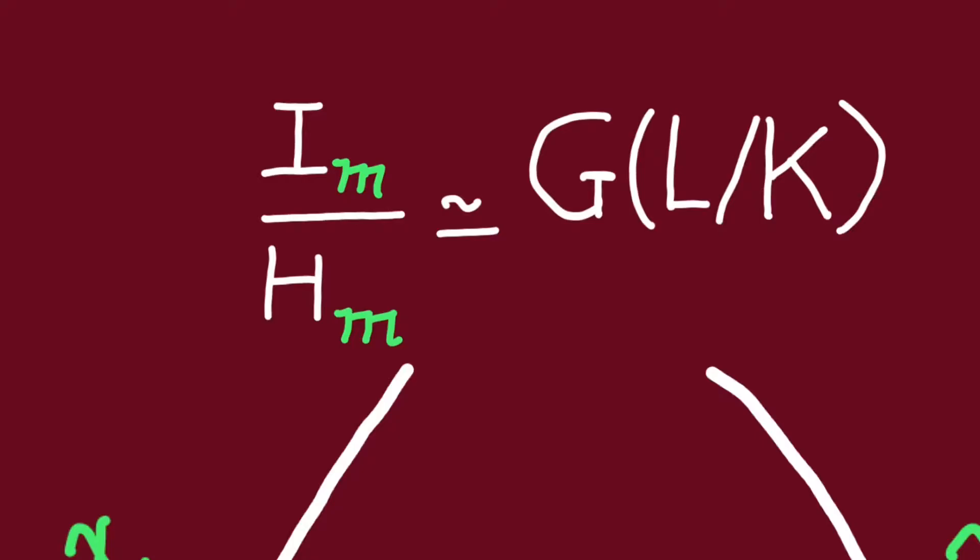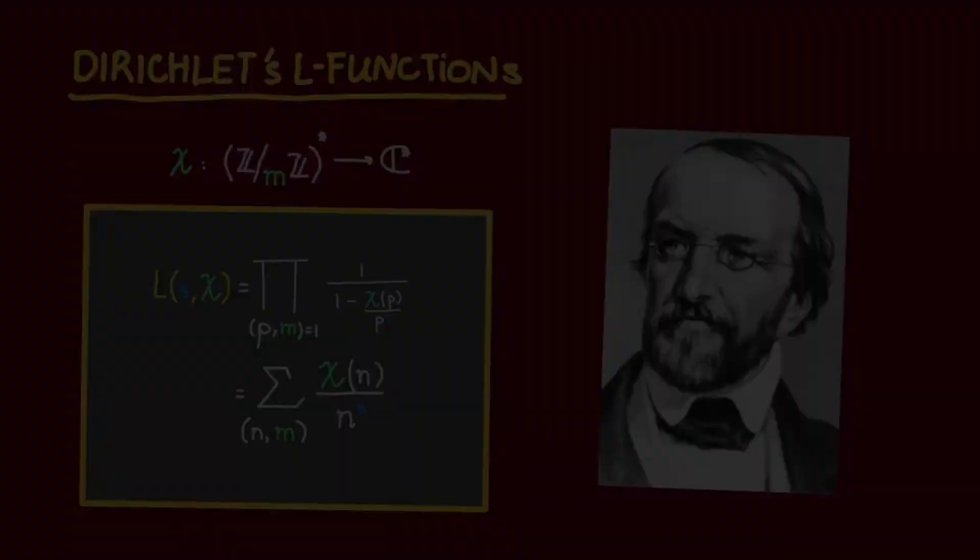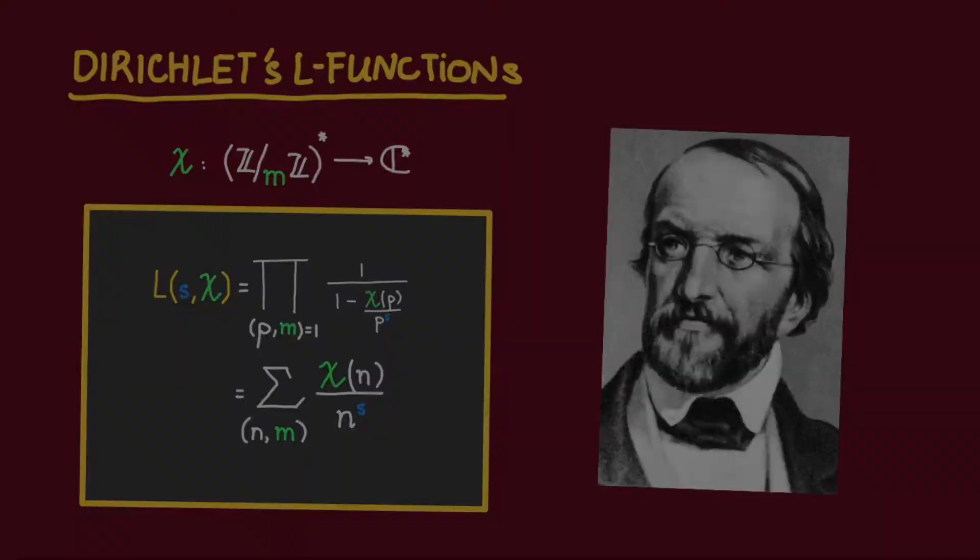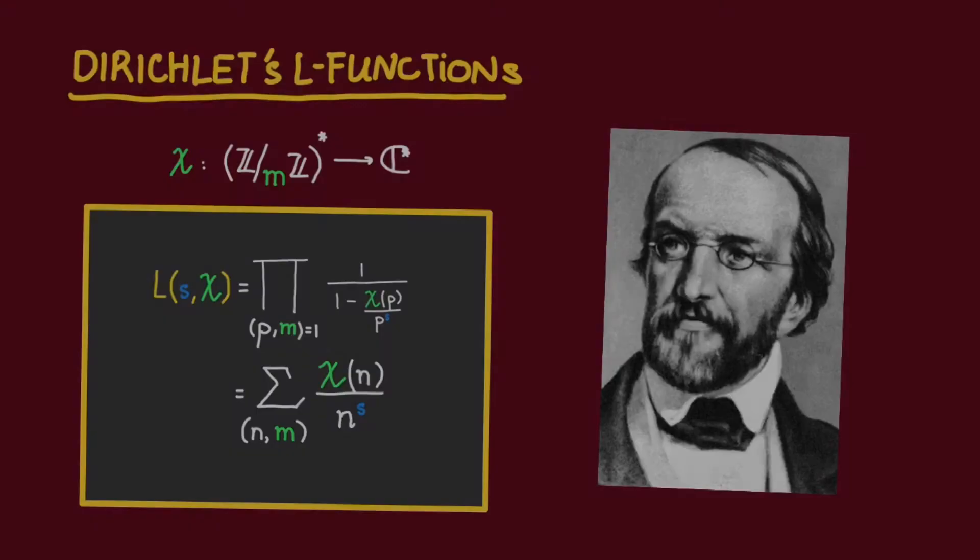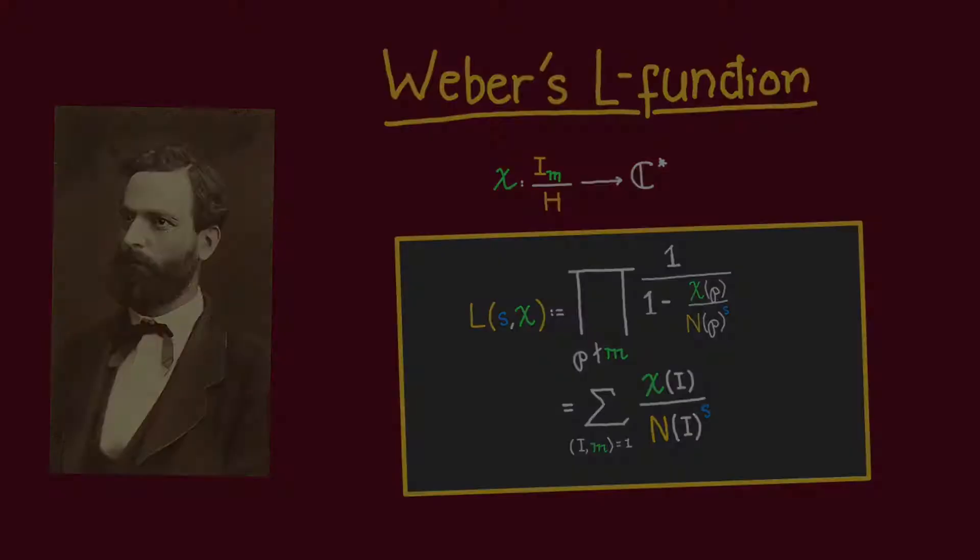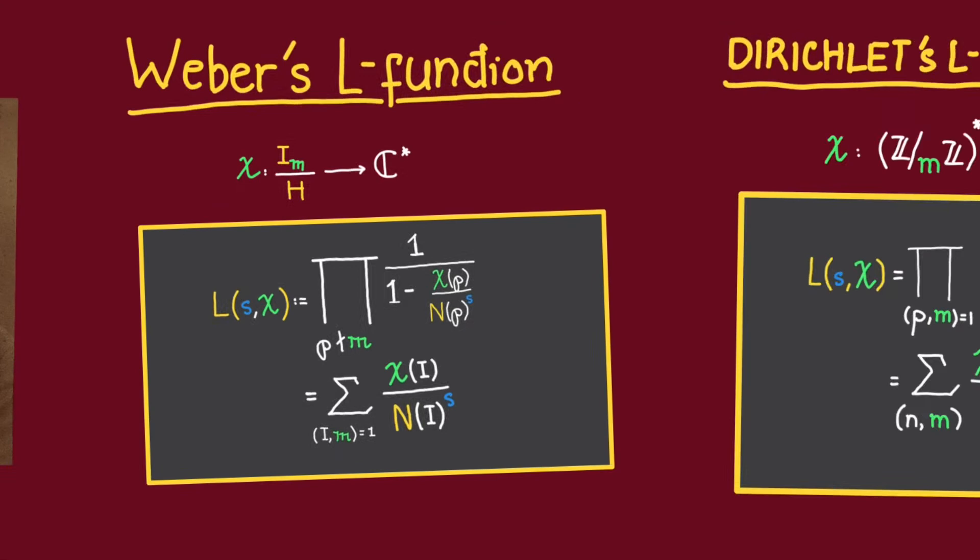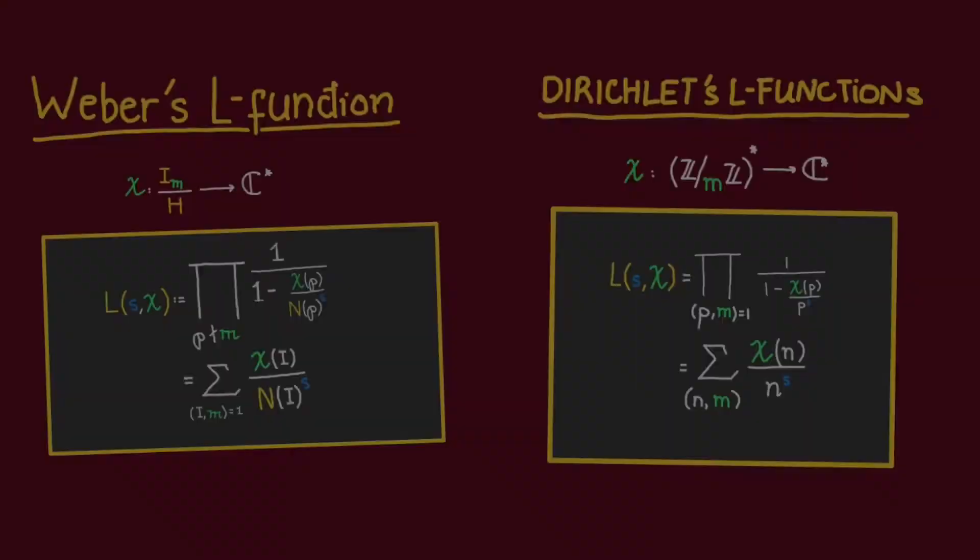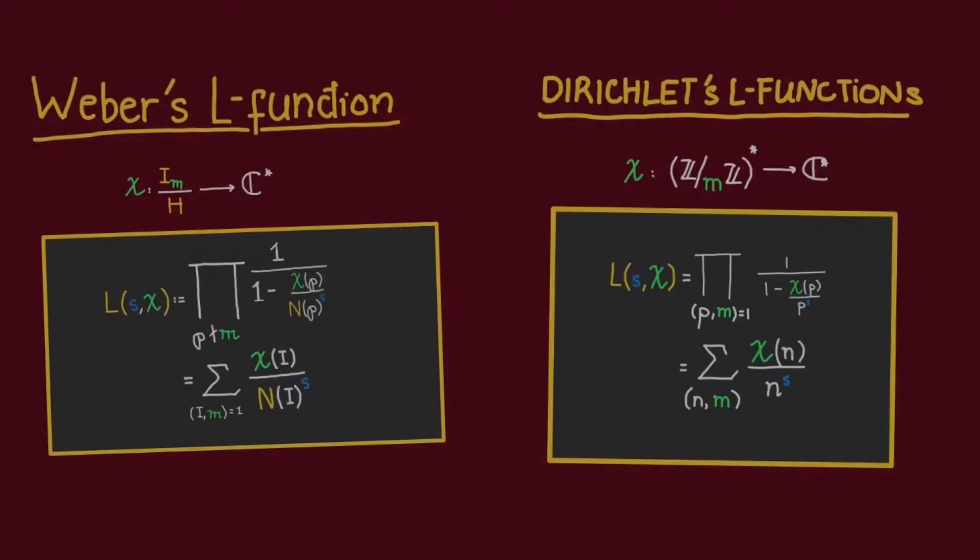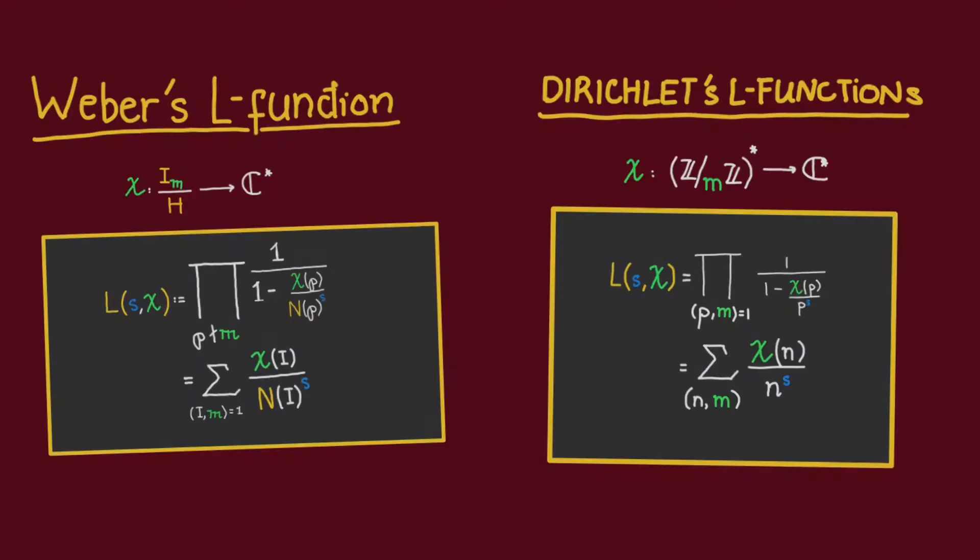Now, whereas Dirichlet's L function is a product over rational primes that do not divide M, Weber's L function is a product over prime ideals not dividing the modulus M. Moreover, whereas the denominator in Dirichlet's L functions are products of the primes themselves, the denominators in Weber's L functions are products of the norm of the prime ideals.